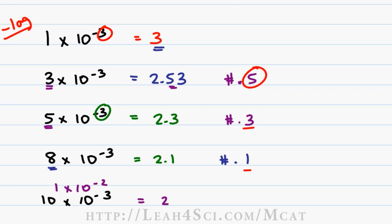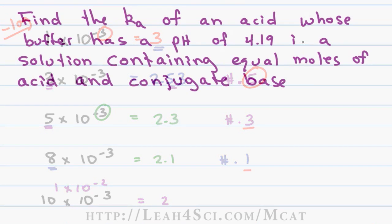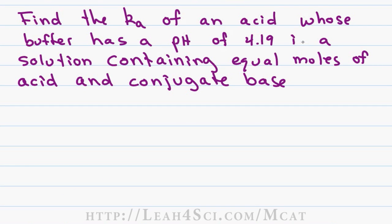But what if you're faced with a question where the actual pH, pOH, or pKa value is given and you're asked to find the concentration or Ka? For example, you may be given a question that says: find the Ka of an acid whose buffer has a pH of 4.19 in a solution containing equal moles of acid and conjugate base.